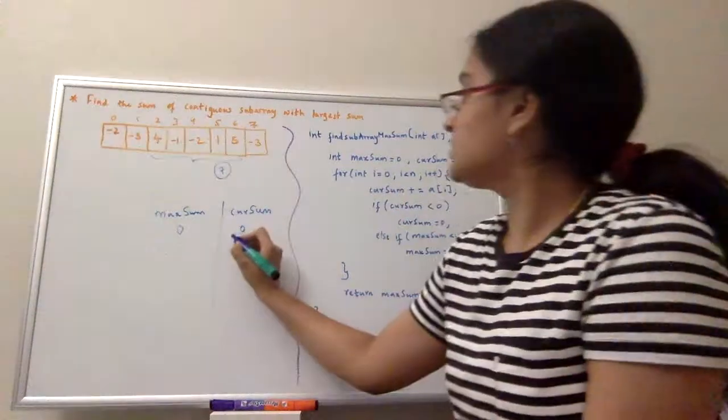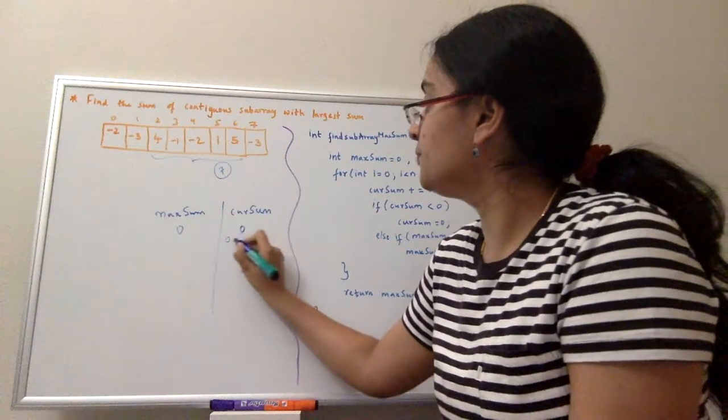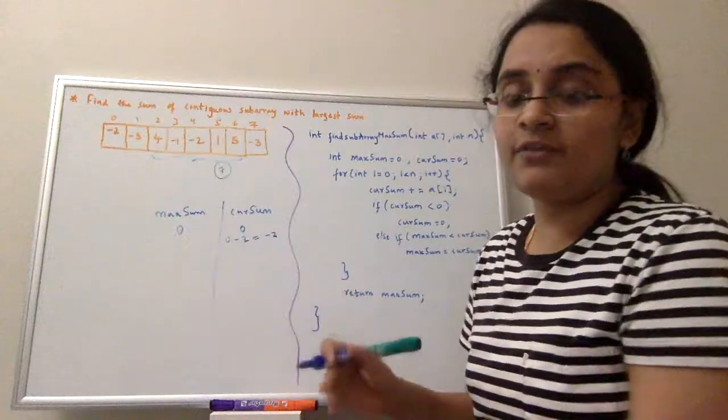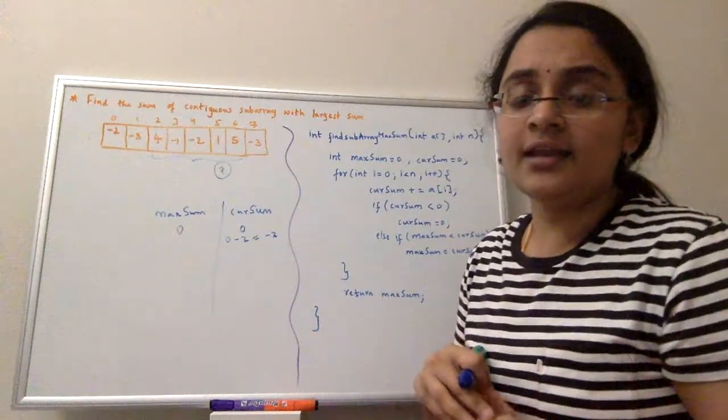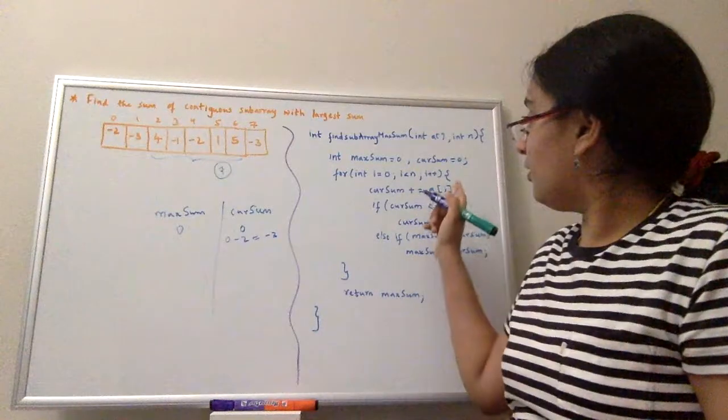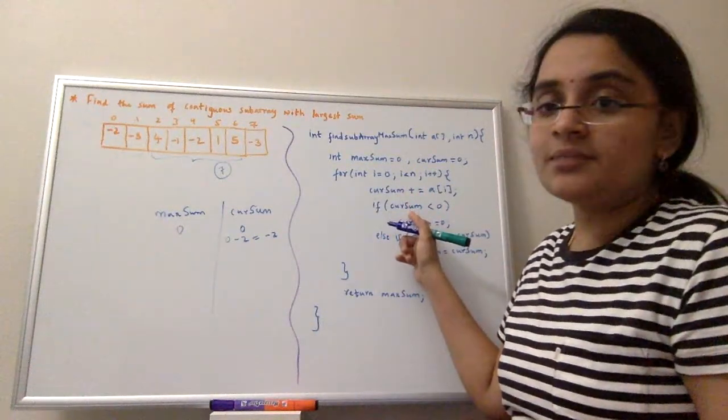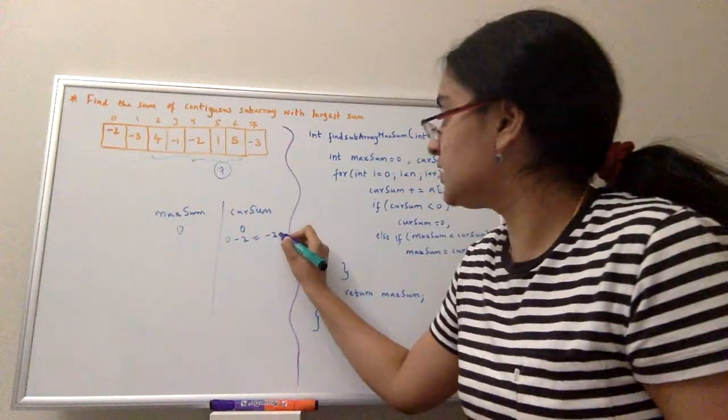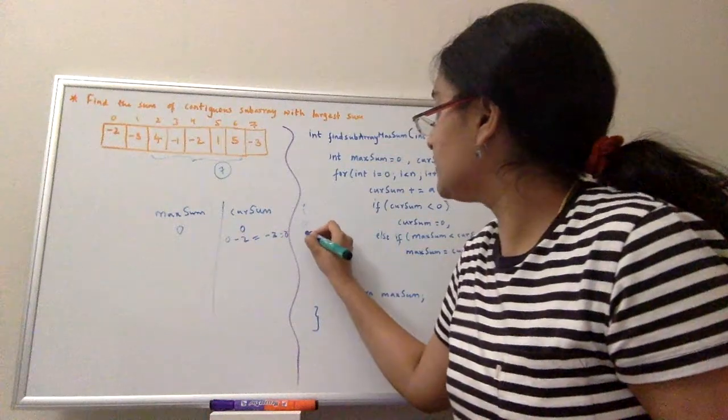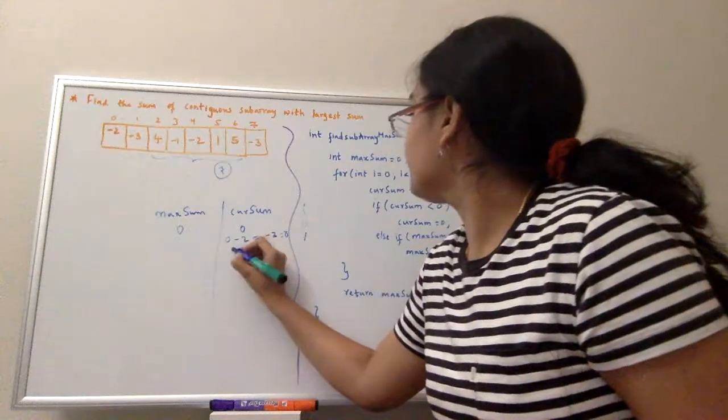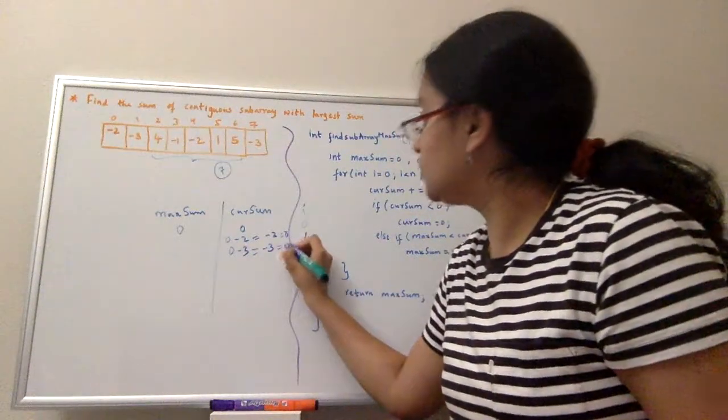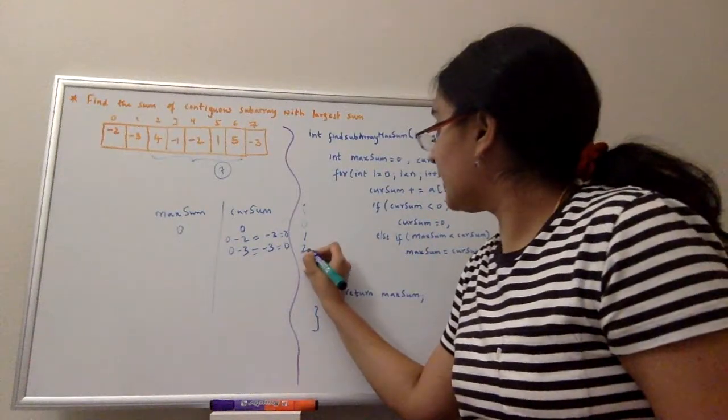So first time current sum is 0 minus 2 which is minus 2. If the current sum is less than 0, then I will set it back to 0. That way I can keep track of the maximum sum. So after calculating the current sum, I'll check whether that current sum is a negative value. If it is, then I'll set it back to 0. And then my i is incremented. My i value is now 1. So current sum is 0 minus 3 which is minus 3 again, and because it is less than 0, it is again set to 0 and my i value is 2.